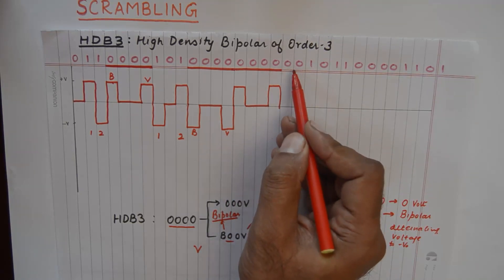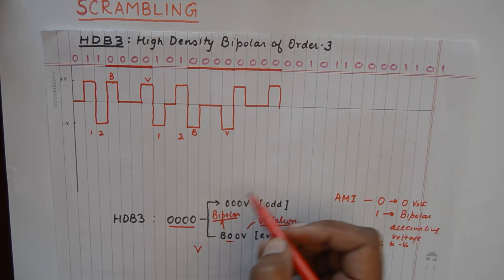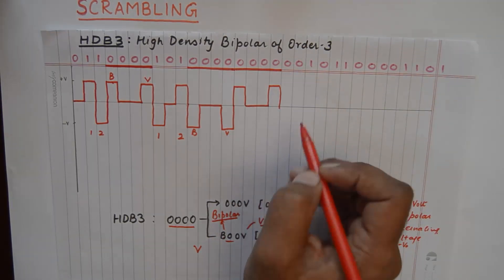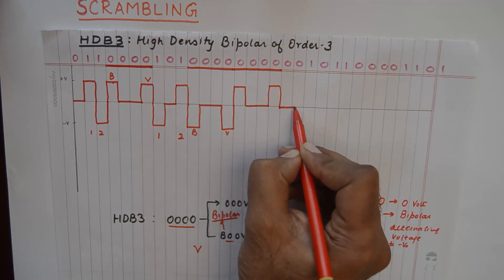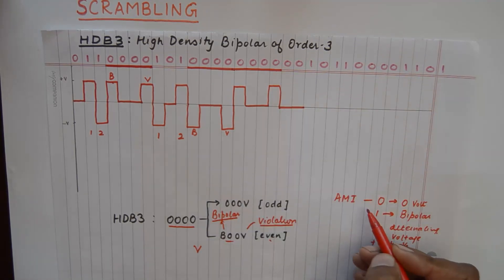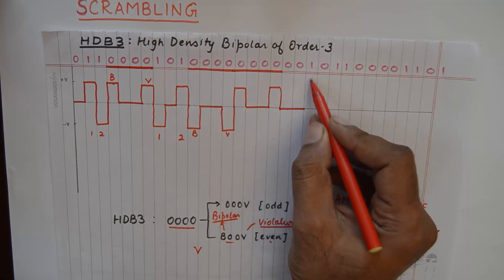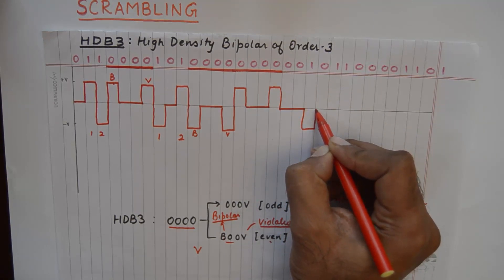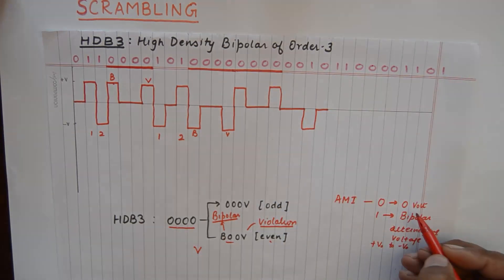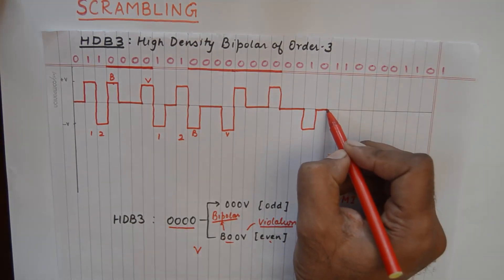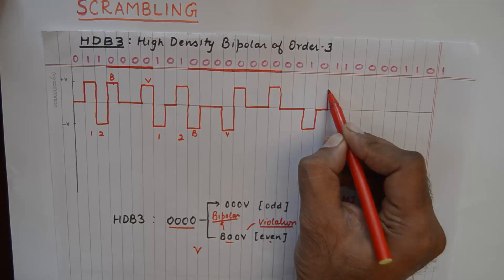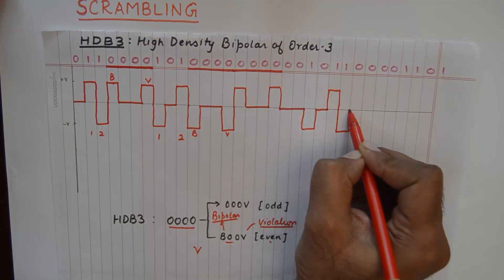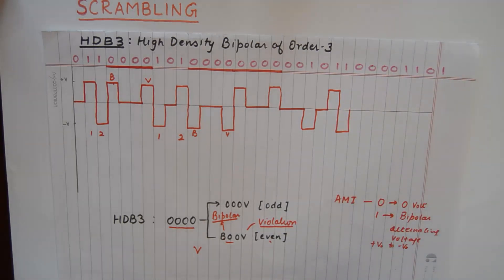And now these two will not constitute a case for encoding because we need at least four zeros to encode. So these will not be encoded. These will be represented using a normal zero in the AMI scheme. Then a one will alternate its mark as usual. Zero will go as usual with zero volt. Next one will alternate its mark. Next one will alternate its mark.